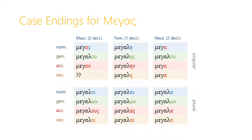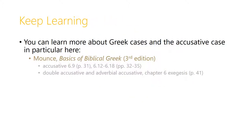Likewise with megas: the masculine accusative singular is megan, using the short stem. The feminine accusative singular is megalen, totally regular. The neuter accusative singular is mega, identical to the nominative singular. And in the accusative plural, we have totally regular forms: megalous, megalas, and megala. You can learn more about the Greek cases, and the accusative case in particular, in Mounce's Basics of Biblical Greek — I've provided once more the section and page numbers for the third edition.